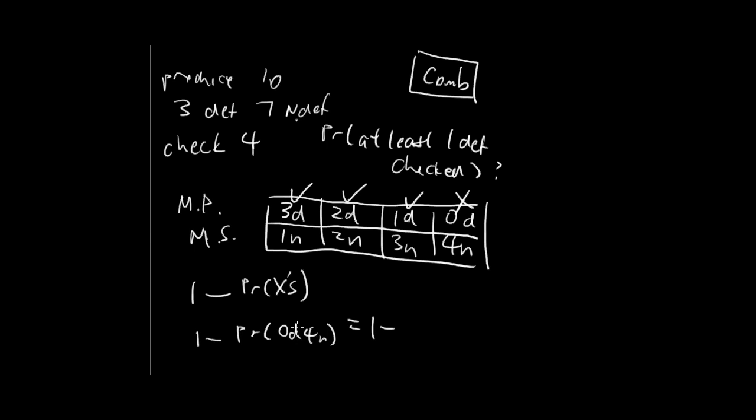And the probability of zero defective for non-defective is we have to choose zero defective out of the three, and then we have to choose four non-defective out of the seven. And over the total for the sample space, which is we have ten of them when we're choosing four.